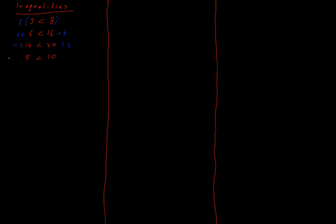Well, what happens if I multiply again, but this time by a negative number? Let's multiply by minus 1. I end up with minus 5 is less than minus 10. And here I run into a problem because this isn't true — I've broken my inequality. Minus 5 is actually greater than minus 10. So this is not true.